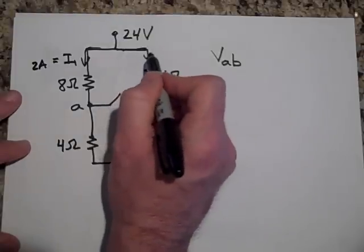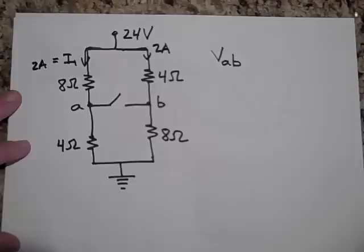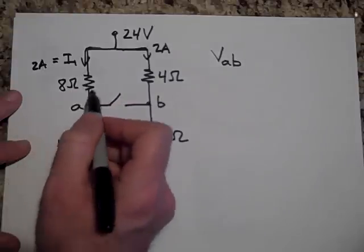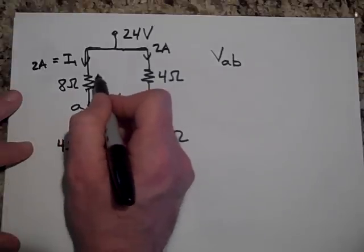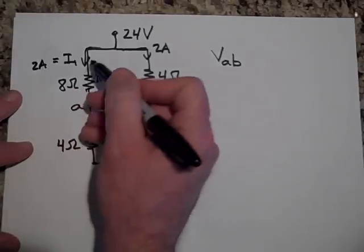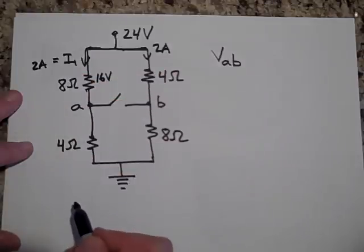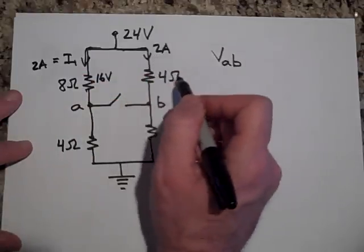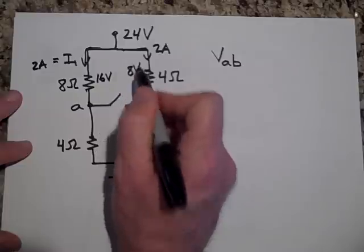And so I'm thinking that this is 2 amps. For that same reason, this is 2 amps as well. So what's the voltage drop across here? The voltage drop across here looks like it's 16 volts because it's 2 amps times 8 ohms. The voltage drop across here is 8 volts.